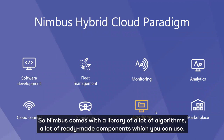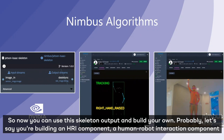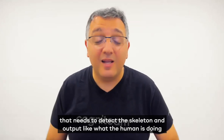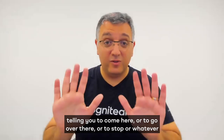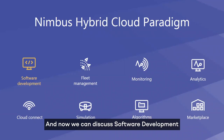Nimbus comes with a library of many algorithms and ready-made components you can use. For instance, there's a skeleton detection algorithm — it's a Nimbus component that takes an image as input and outputs a skeleton. You can use that skeleton output and build your own component, such as an HRI (human-robot interaction) component that detects the skeleton and outputs what a human is telling the robot — come here, go over there, stop, and so on. You can build upon ready-made components using a drag-and-drop approach.